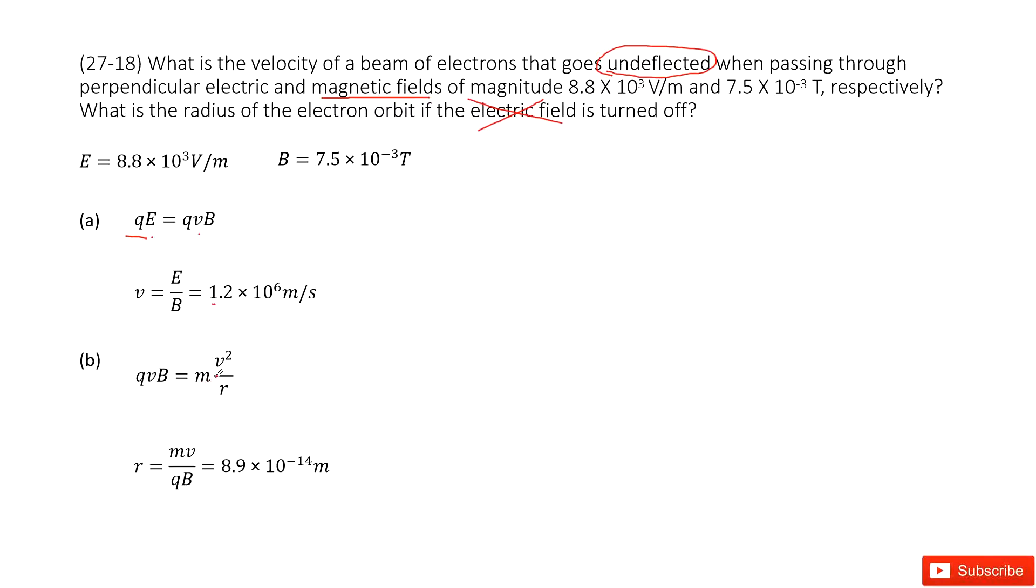So QVB equals mass times V squared divided by R. Then we can get the function for R as mV over QB. Input the quantities, you get the answer there.